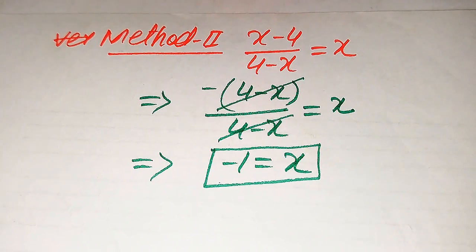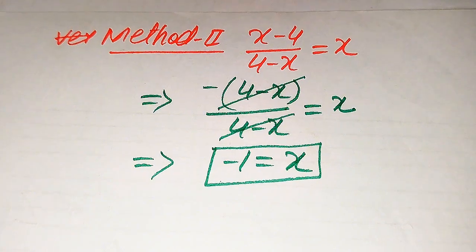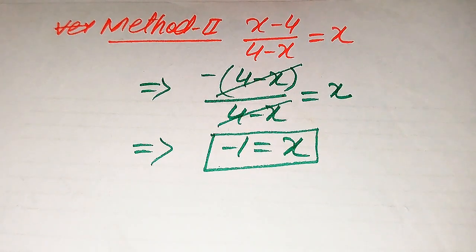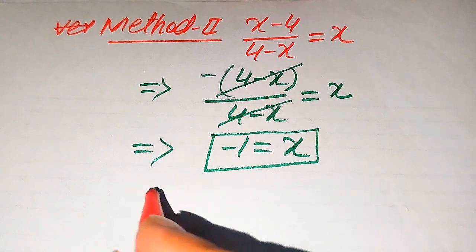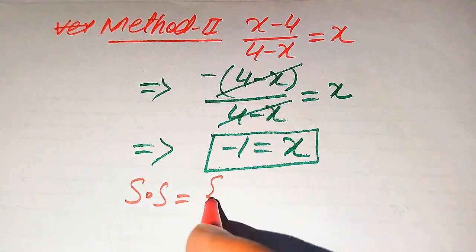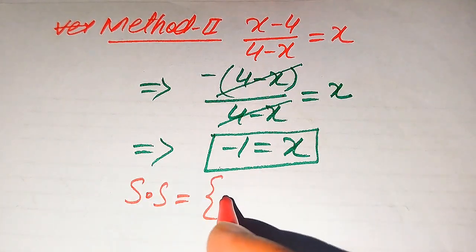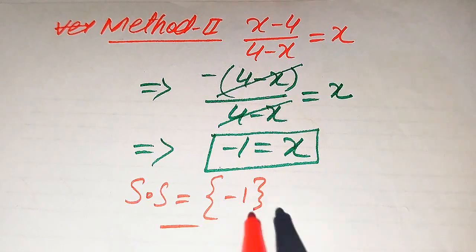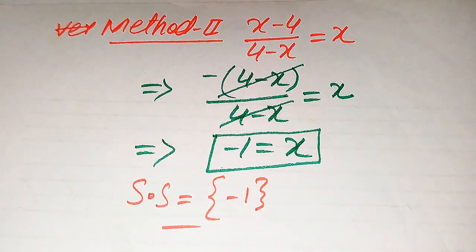In the second method we get just one root directly, and the first method confirms it satisfies the equation. We finally conclude that the solution set of this question is x equals minus 1. This is the final conclusion. Thank you so much for watching this video — please subscribe to my channel for more exciting videos.